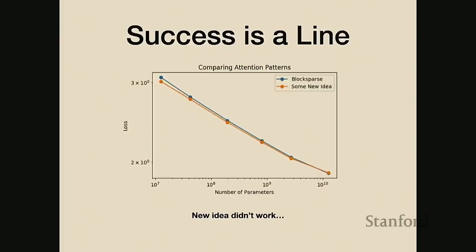A common research pattern: you come up with a new idea, do the cheapest experiment, see improvement, get excited, then make a scaling plot and realize it doesn't really matter much at all. This is a useful diagnostic for whether your idea truly works. Ideas that are really going to have a huge impact should show consistent improvement at scale - ideally mattering more as models get larger. Some ideas make no difference on small models but do better on large ones - those are the ones worth paying attention to.